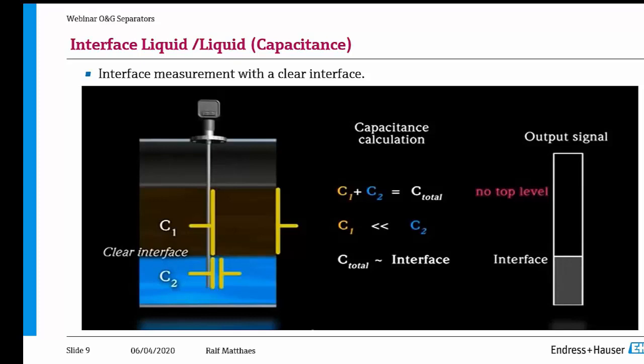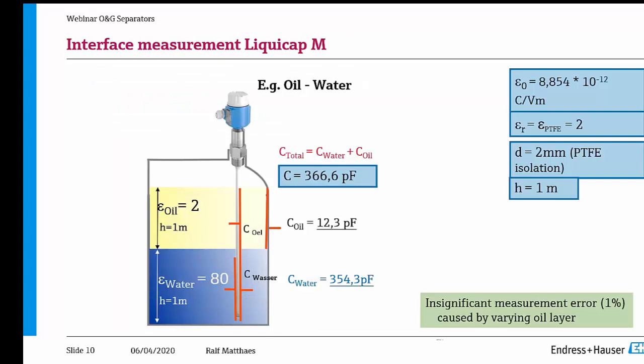Hence it's possible to measure interface using capacitance systems with a very small error. Water creates a capacitance change of 350 pF per meter of level, and oil with one meter of level just around 10 pF — very small compared to water. Because of that, there's only a very small error of around 1% if the oil level is changing. Using capacitance probes you can measure quite reliably the interface level in separation processes.